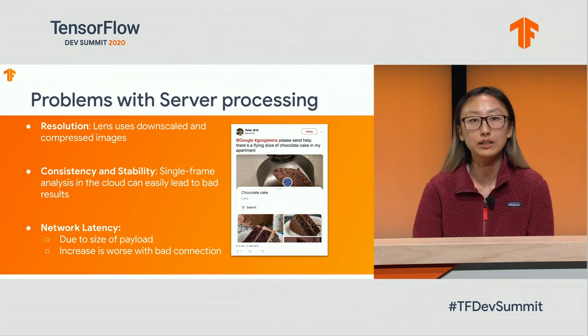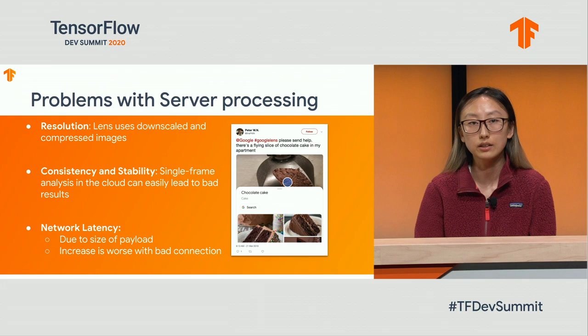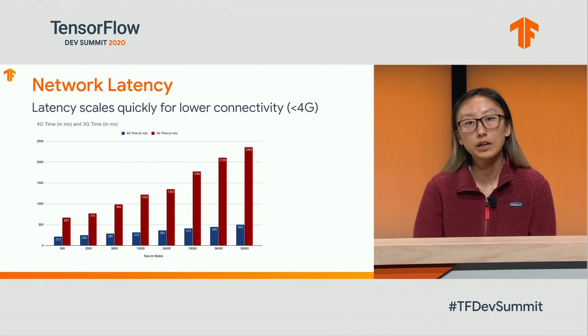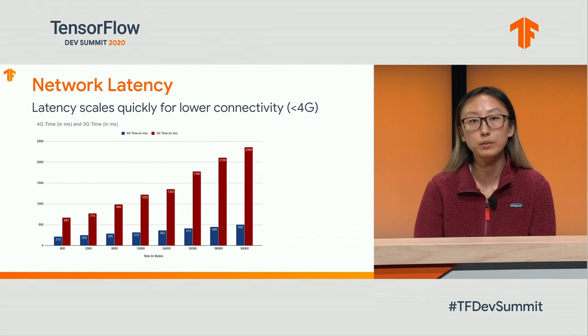Lens aims to provide great answers to all of our users instantly after opening the app. We want Lens to work extremely fast and reliably for all users, regardless of device type and network connectivity. The main bottleneck to achieving this vision is the network round trip time with the image payload. Network latency goes up significantly with poor connectivity as well as payload size. In this graph, you can see latency plotted against payload size, with the blue bars representing a 4G connection and the red a 3G connection. For example, sending a 100 KB image on a 3G network can take up to 2.5 seconds, which is very high from a user experience standpoint.